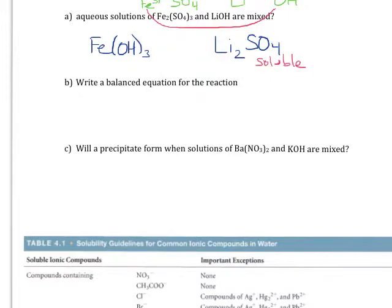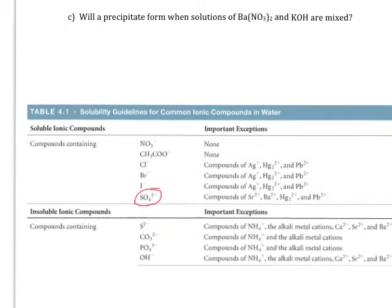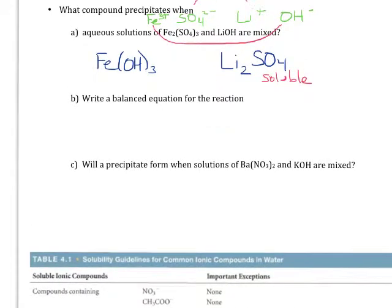So let's look at the next one, the iron hydroxide. Again, using my solubility guidelines, I can find hydroxide. I can see that hydroxide is listed in the insoluble compounds and that iron is not there as an exception. That means that my iron hydroxide must be insoluble. Since it's insoluble, that is what precipitates.